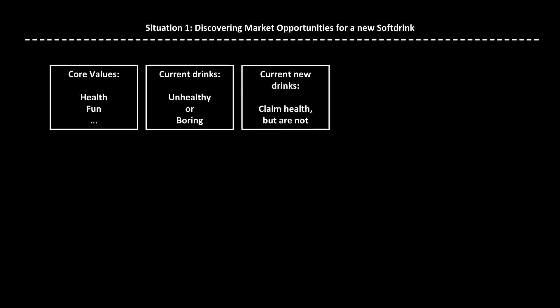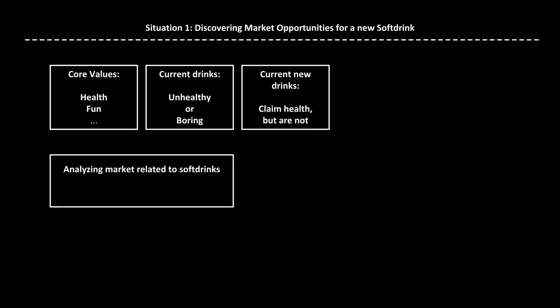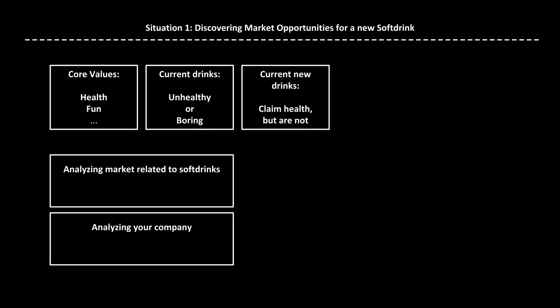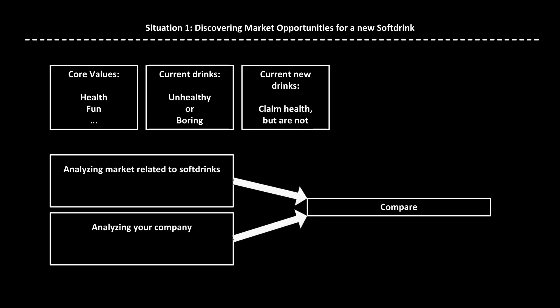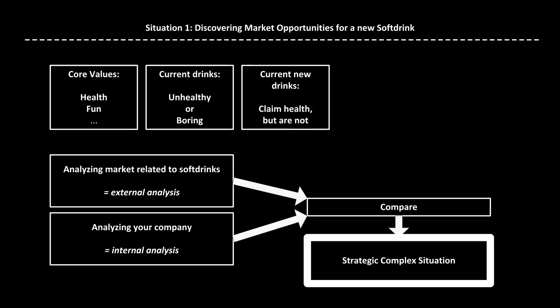Now where do you start? What is the issue here might be a good first question. You might analyze the situation in Western Europe for everything that has to do with drinking and health, and you analyze the situation your company is in — what it stands for, what it produces, what it is capable of. Comparing these two analyses: one of the external world of Western Europe and one of the internal world of your company. You have defined a strategic complex situation in which you can act. You have to create matches between the situation in Western Europe and the situation in your company, and these matches are your market opportunities. And you need a lot of ideas from many people to identify them and make them happen.